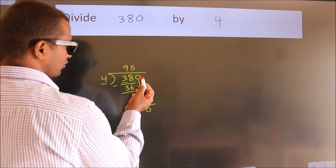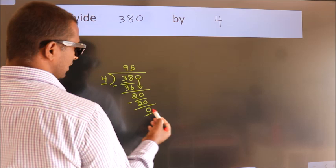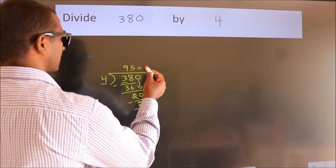After this, no more numbers to bring down. And we got remainder 0. So this is our quotient.